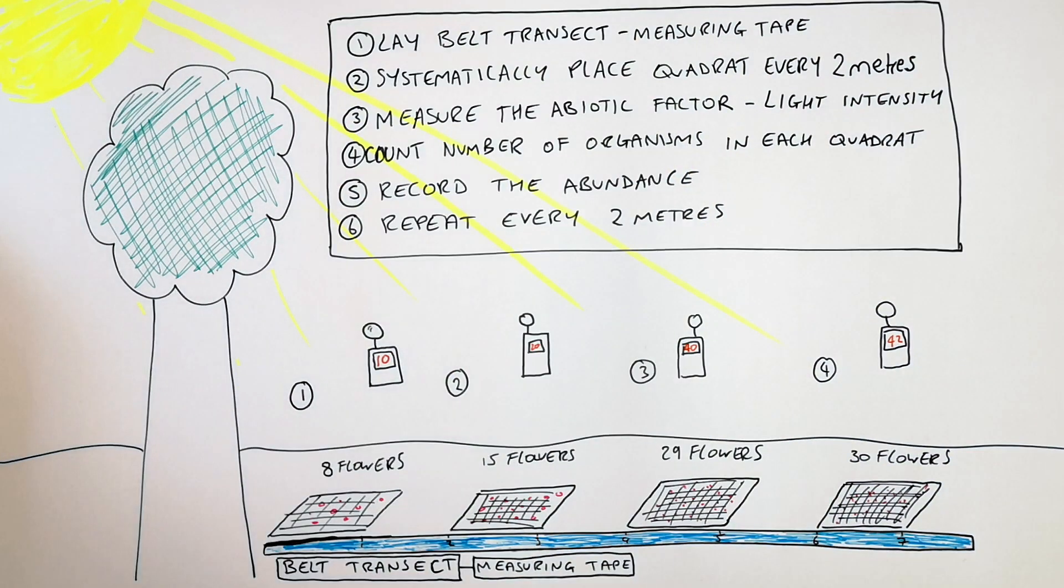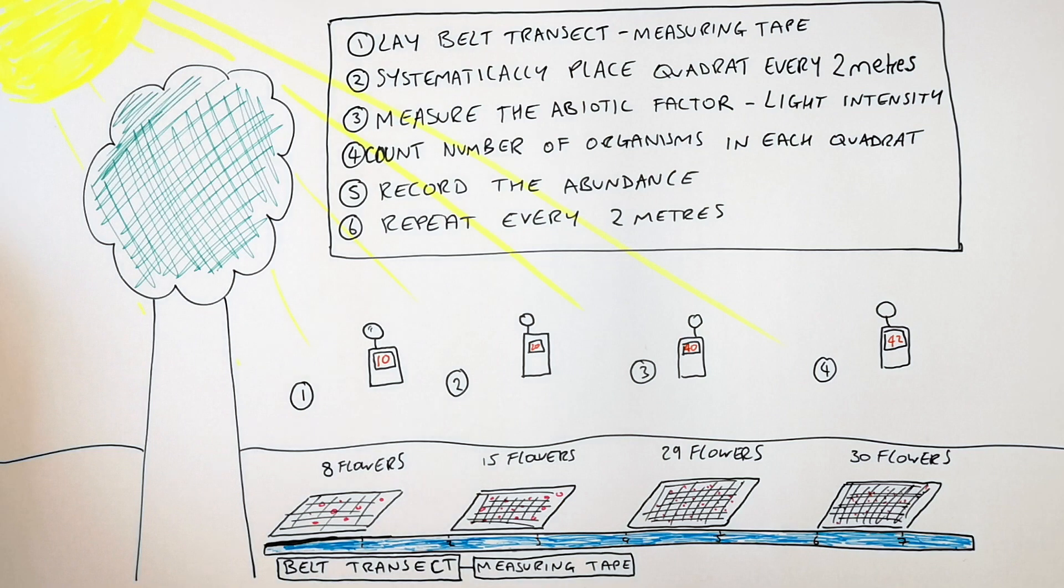You can then make a conclusion based on your results. So for ours, as the light intensity increased away from the tree, the abundance of flowers in each quadrat also increased. So that means as you increase sunlight, you increase the abundance of flowers.